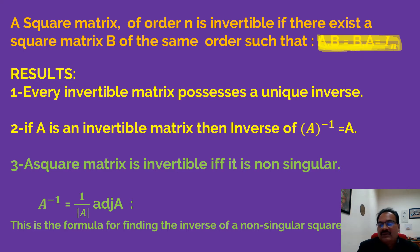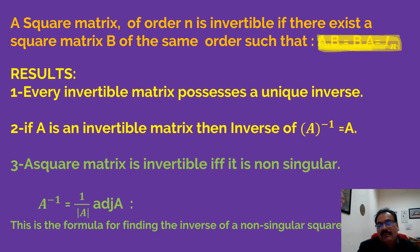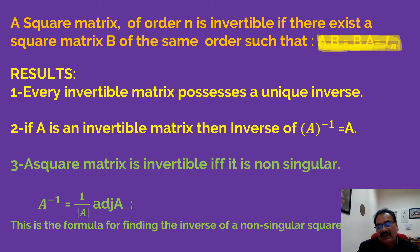Now there are some important results. Every invertible matrix has a unique inverse. Let us look at how and why: if A is an invertible matrix, then the inverse of A is unique.